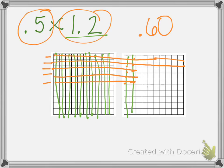We have done a little bit of work with the standard algorithm. So you can also check your work with that by lining up the numbers, doing your multiplication. We have 2 numbers after the decimal, going over 2. And there we have our 60 hundredths again.